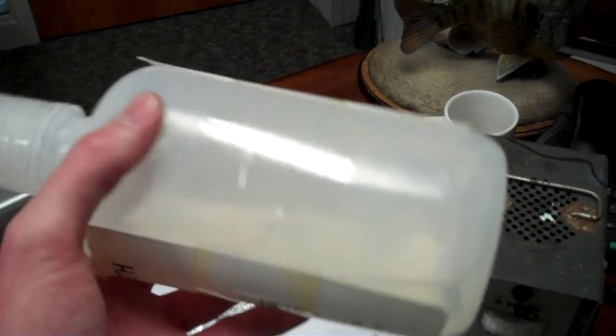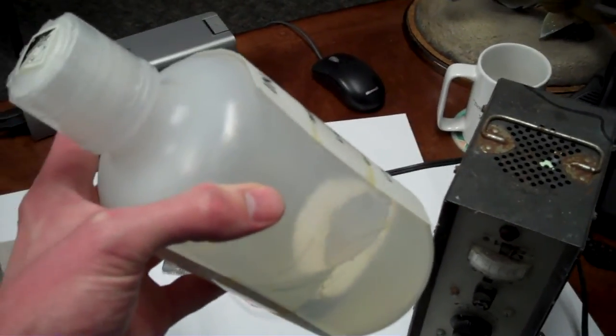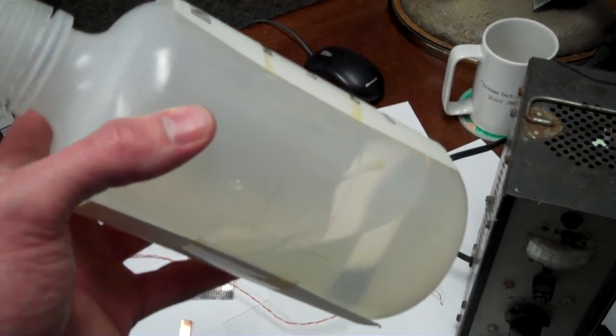Now, as far as the control of the plating bath is concerned, it is necessary to control the pH. If the pH gets too high, you can actually have a flocculent form, which is indium hydroxide.